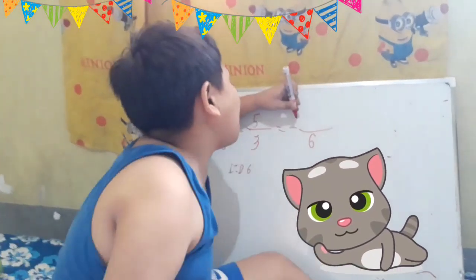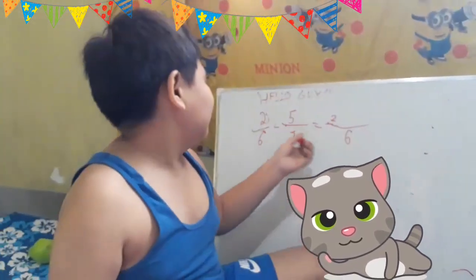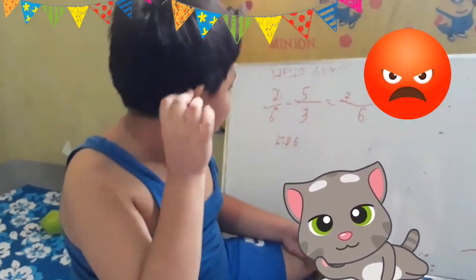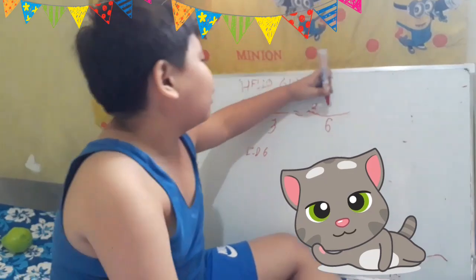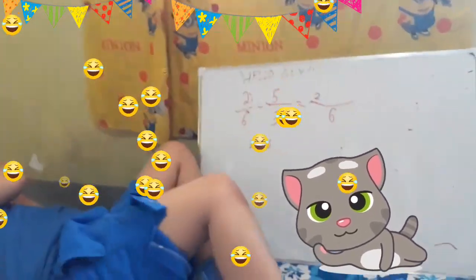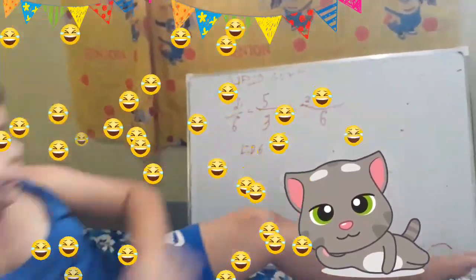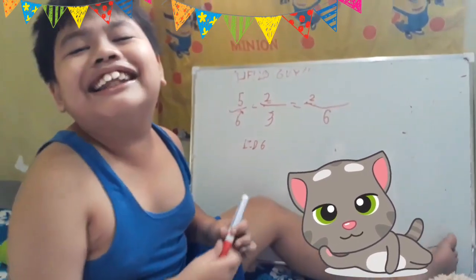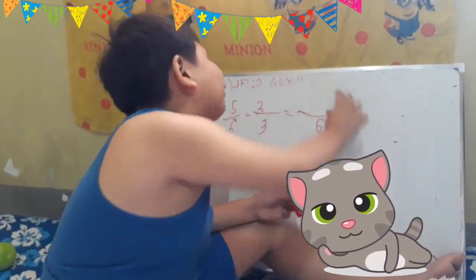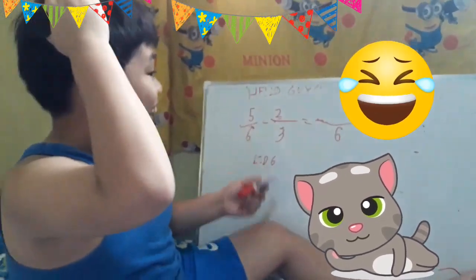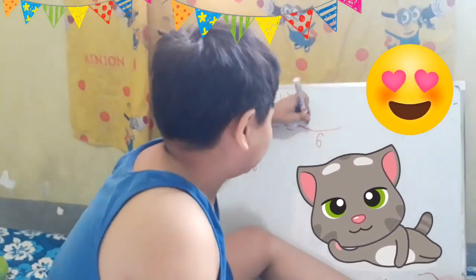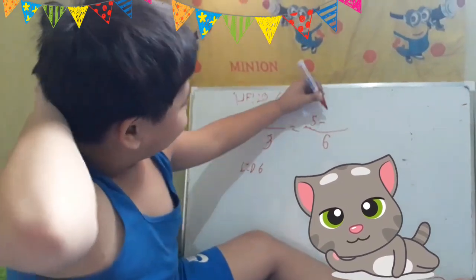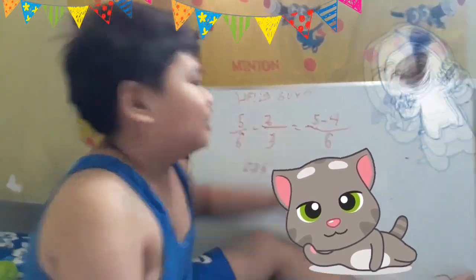One times two. Six divided by six is one, one times two equals two, six divided by three is two, two times five is ten. Five over three. Five minus four is one.